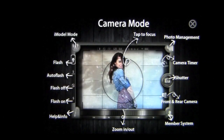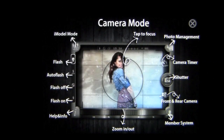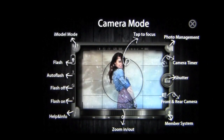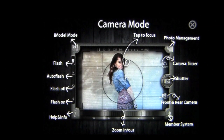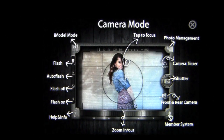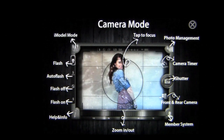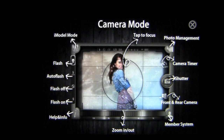Crazy Mike from crazymikesapps.com with an iPhone app demo for Pocket Snapper, Virtual Studio and iModel by Kdan Mobile Software. This application is in the photography category, works best on an iPhone or iPod Touch, and currently sells for $1.99.